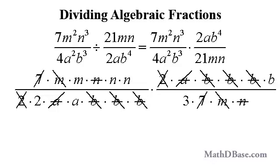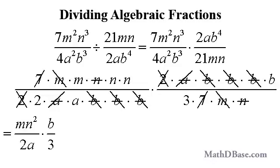Canceling the common factors, we are left with m times n squared over 2 times a times b over 3. The product is m times n squared times b over 6a, which is also the quotient of the original problem.